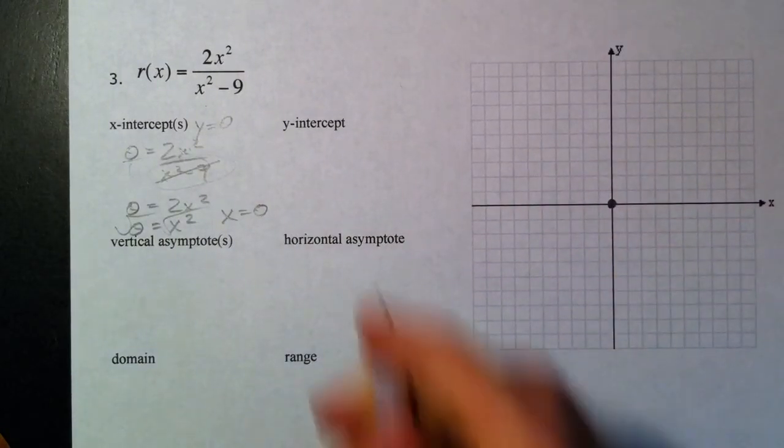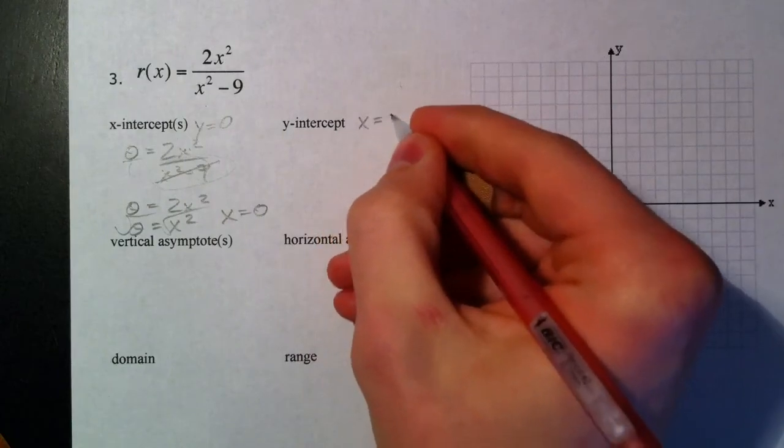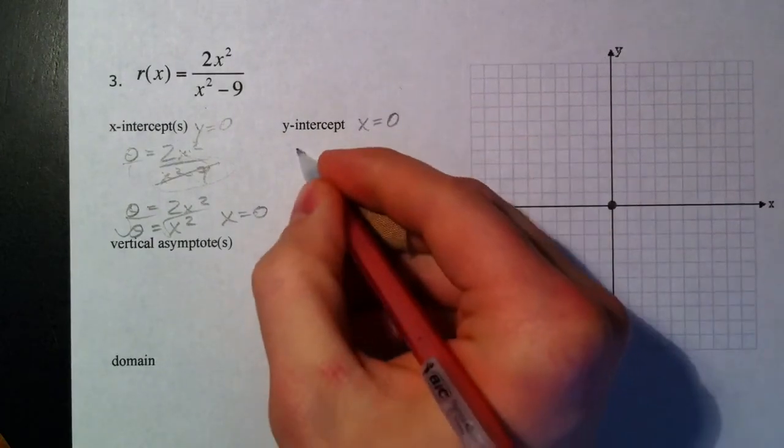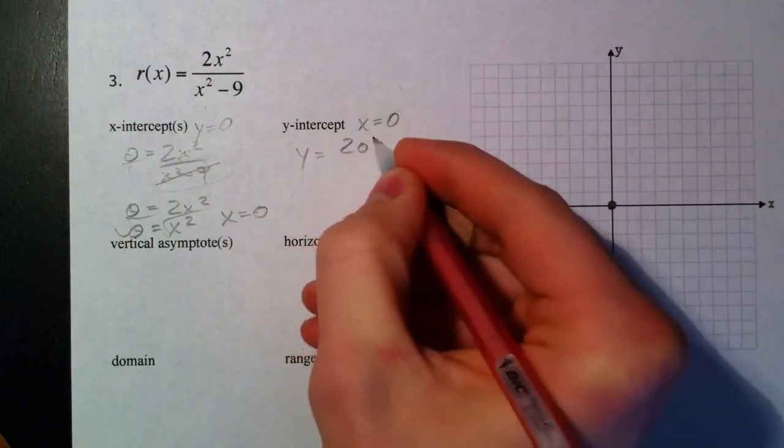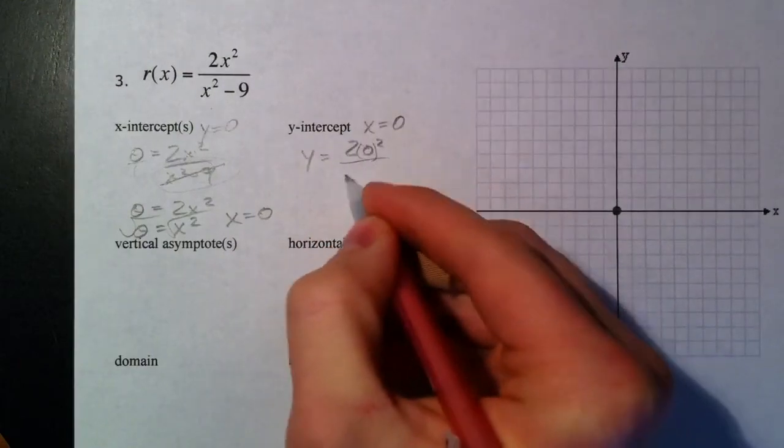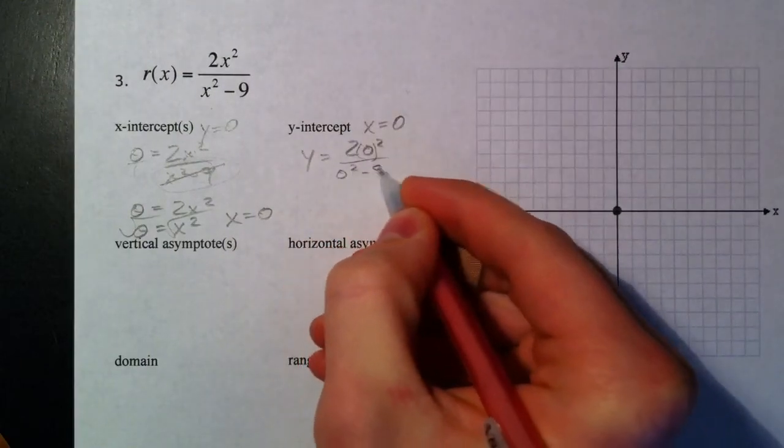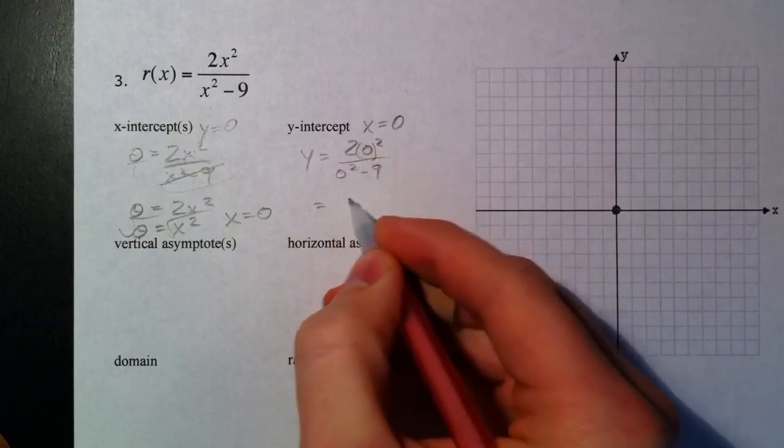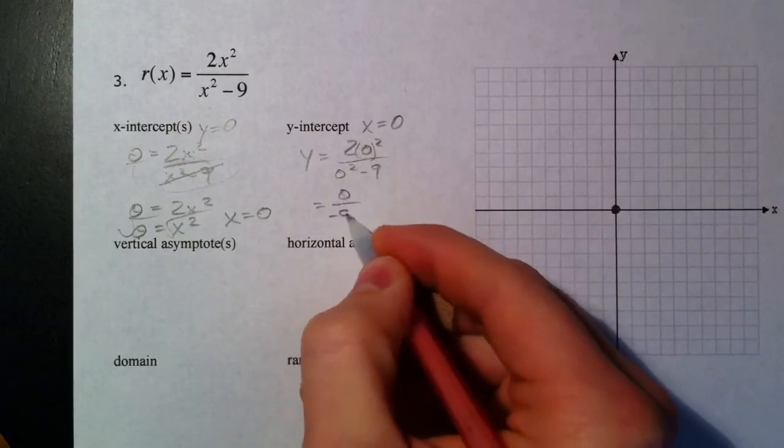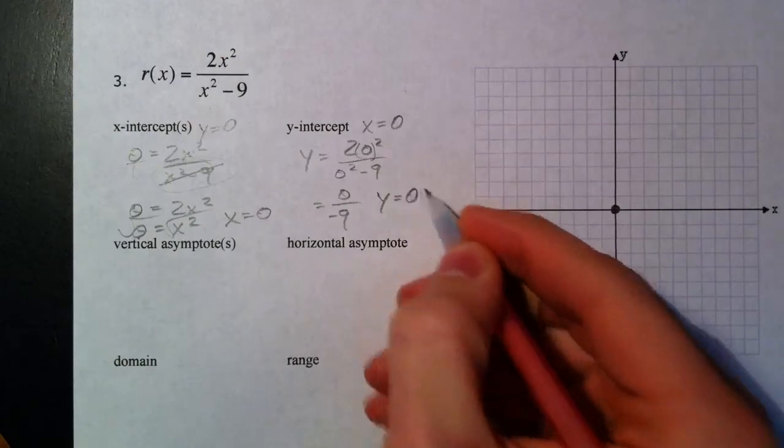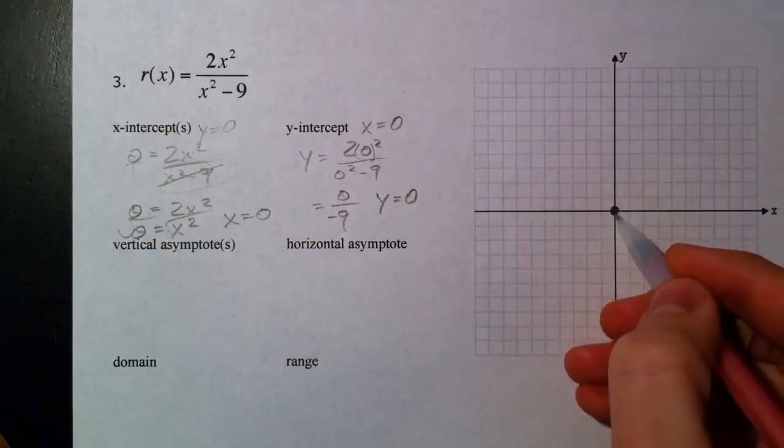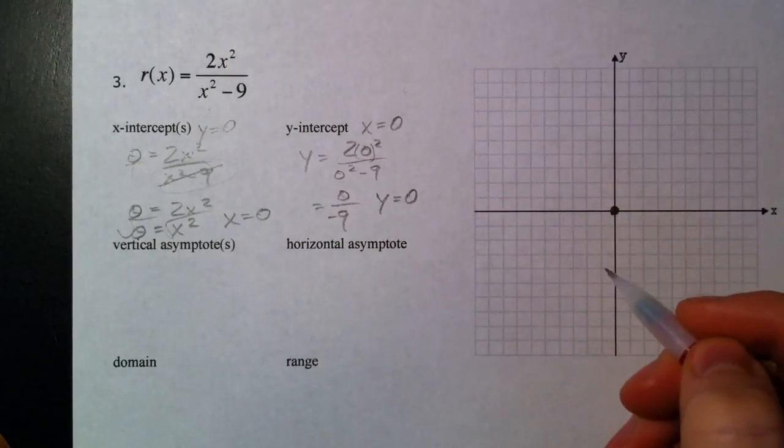The y-intercept, the x value is equal to 0. So y equals 2 times 0 squared over 0 squared minus 9. So we have 0 on top divided by negative 9. Y value equals 0, and that makes sense because we're right at the origin.